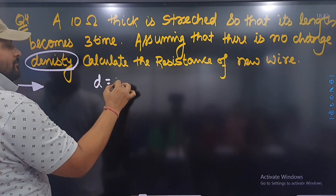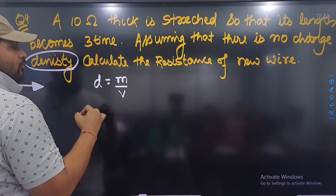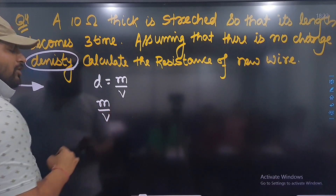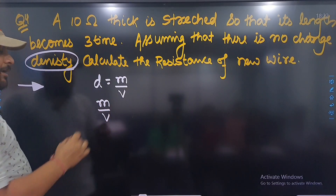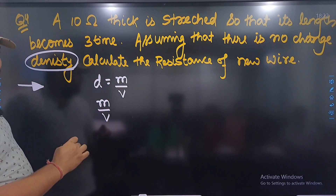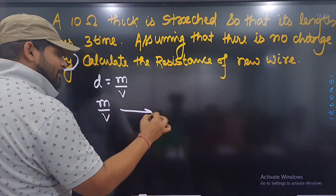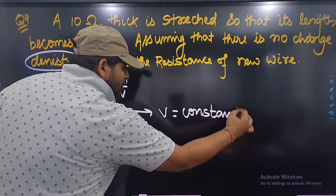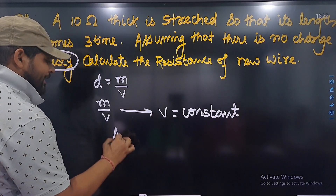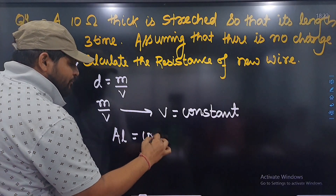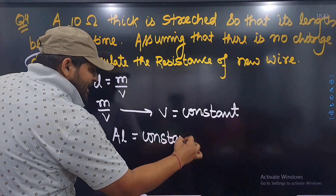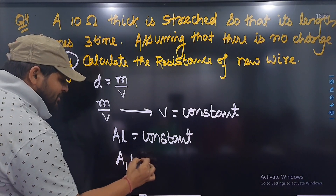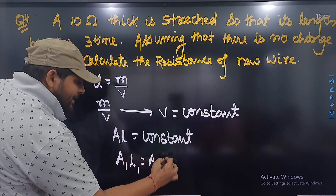Density is equal to mass by volume। अगर यह constant है, तो mass by volume constant है। Mass किसी चीज़ का सदा constant होता है, इसका मतलब volume भी constant है। और volume constant होने का मतलब है area into length भी constant है।